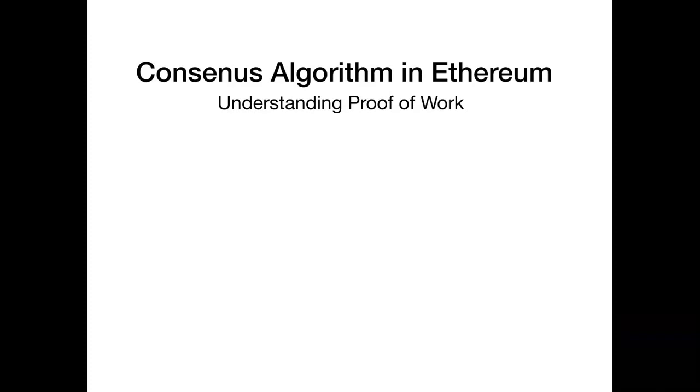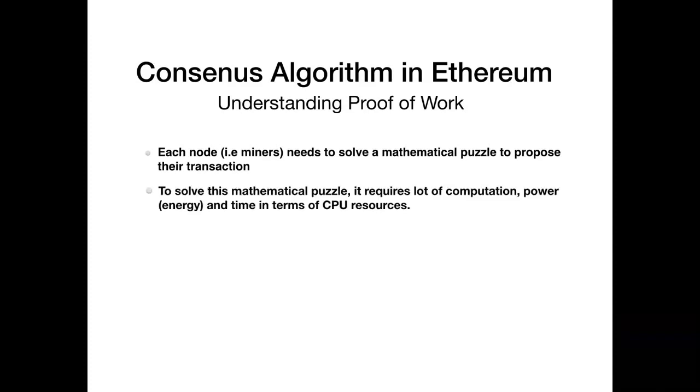In a proof of work based Ethereum network, each node needs to solve a mathematical puzzle to propose their transaction or to be more precise, an intent to create and commit the block. To solve this mathematical puzzle, it requires a lot of computation, power and time in terms of CPU resources.